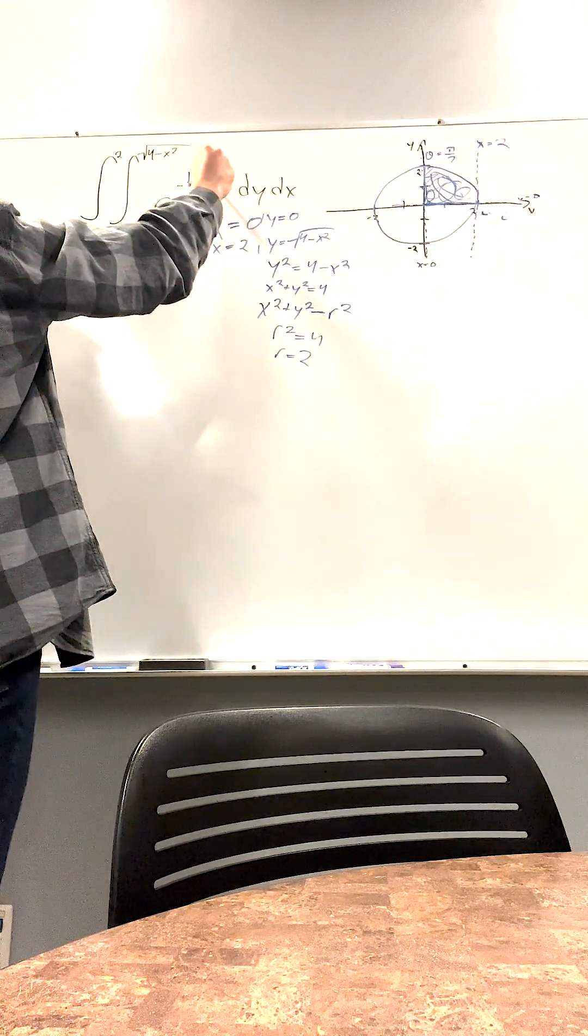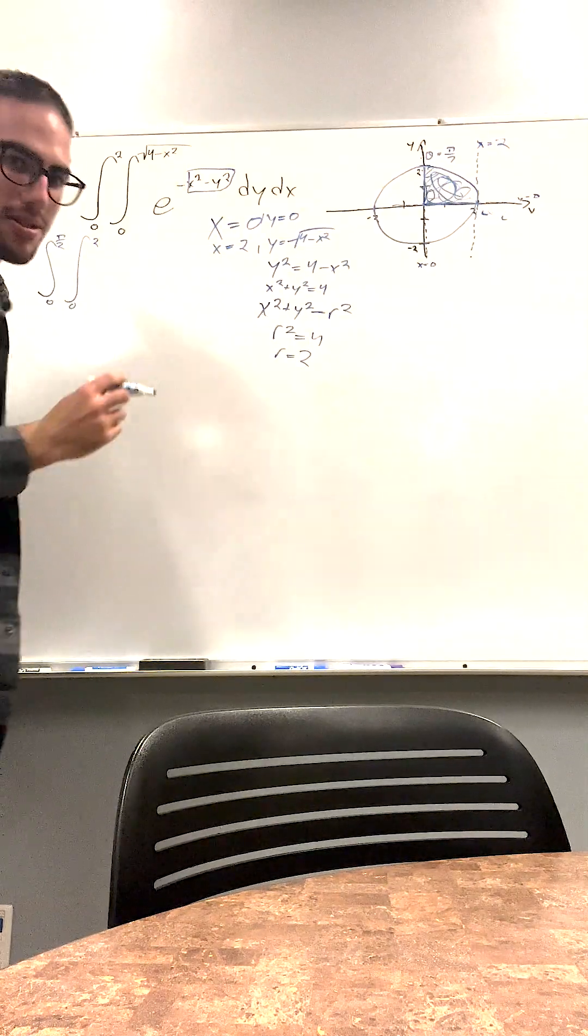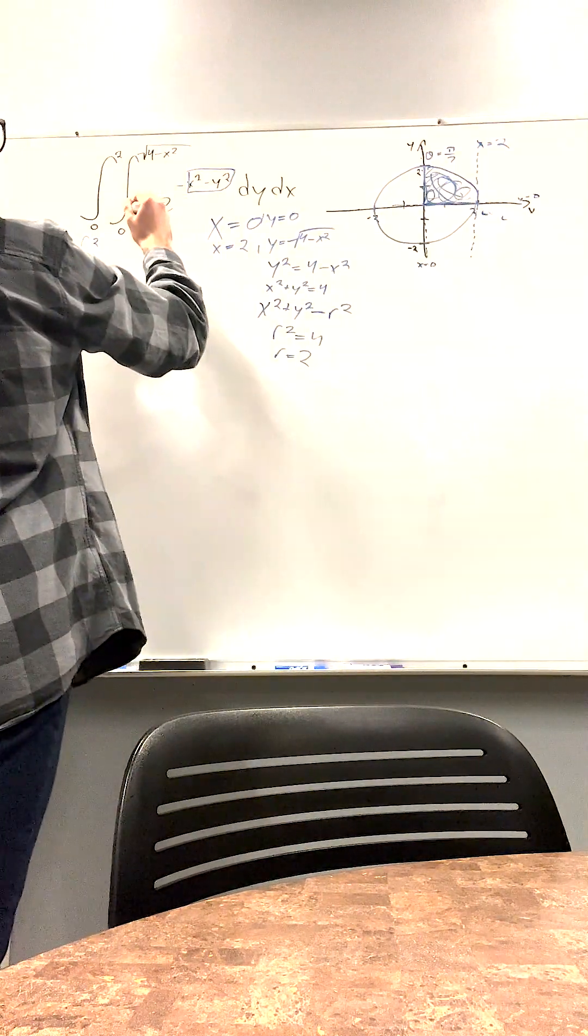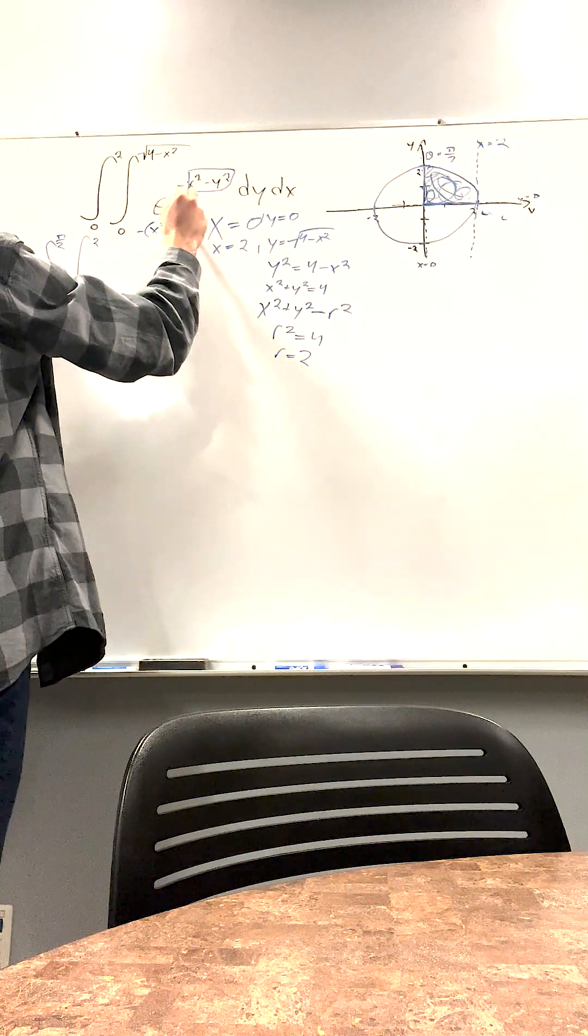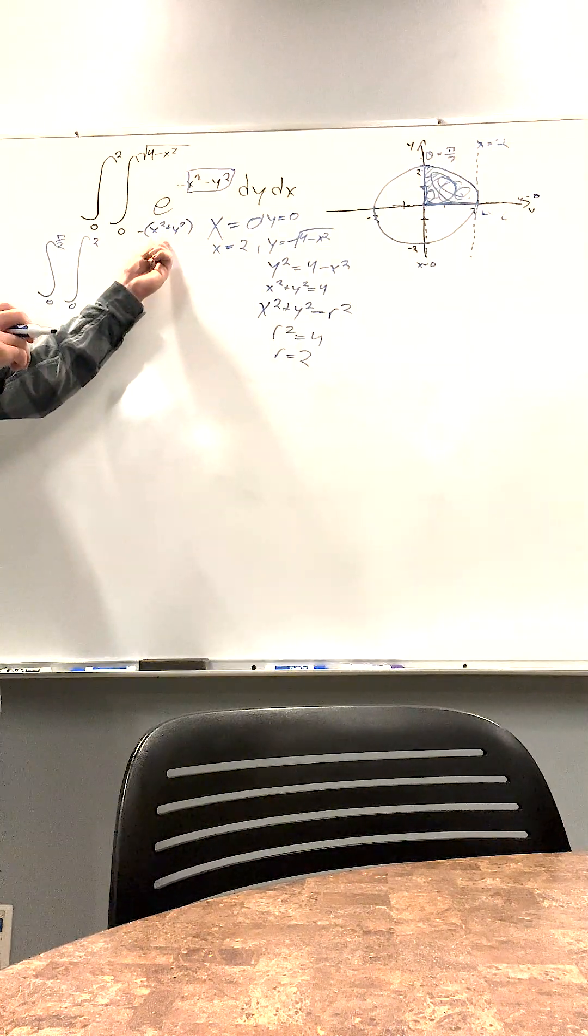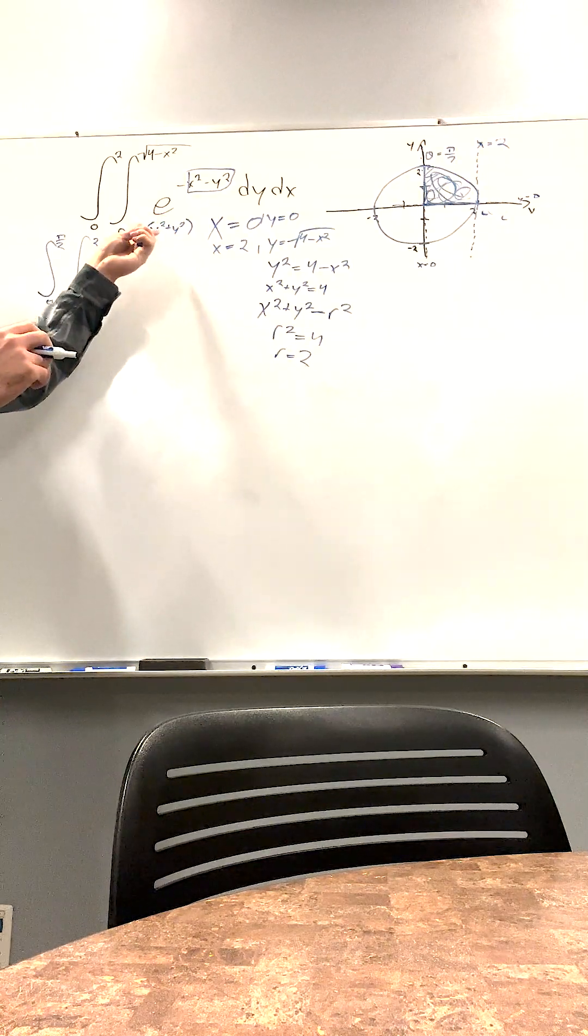So basically we need to re-evaluate this to be in terms of r or theta. So we know that x squared plus y squared is equal to r squared. So if we factor out a negative 1, x squared plus y squared. And this is equal to r squared. So basically it's going to be e to the negative r squared.